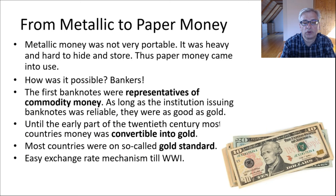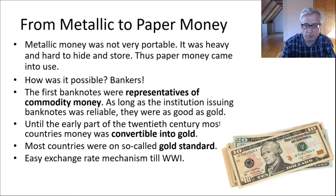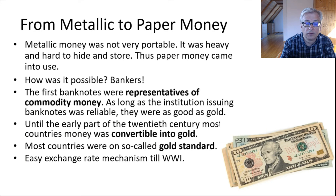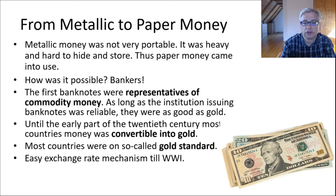Most countries were on the so-called gold standard, and that was very useful, especially for the exchange rate mechanism. Exchange rates were easy to create — whenever you wanted to exchange one currency for another, you looked at what amount of gold each currency represented and made them equal. For instance, if a British pound represents twice as much gold as an American dollar, then it takes two dollars to exchange for one British pound. This nice exchange rate mechanism was in operation until the First World War.